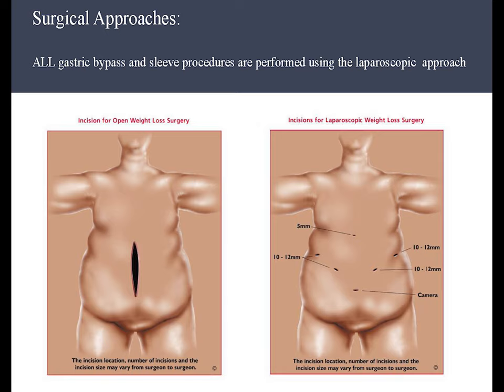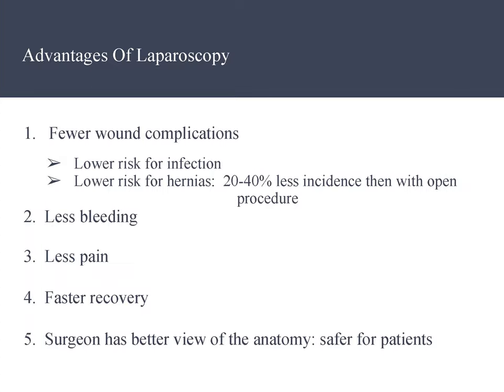Regarding surgical approaches, all gastric bypass and sleeve procedures are performed using the laparoscopic approach, which is small incision surgery — typically five small incisions. Advantages include fewer wound complications, lower risk of infections, lower risk for hernias decreased by 20 to 40% compared to open procedure, less bleeding, less pain, faster recovery, and the surgeon has a better view of the anatomy, making it safer and faster for all patients.